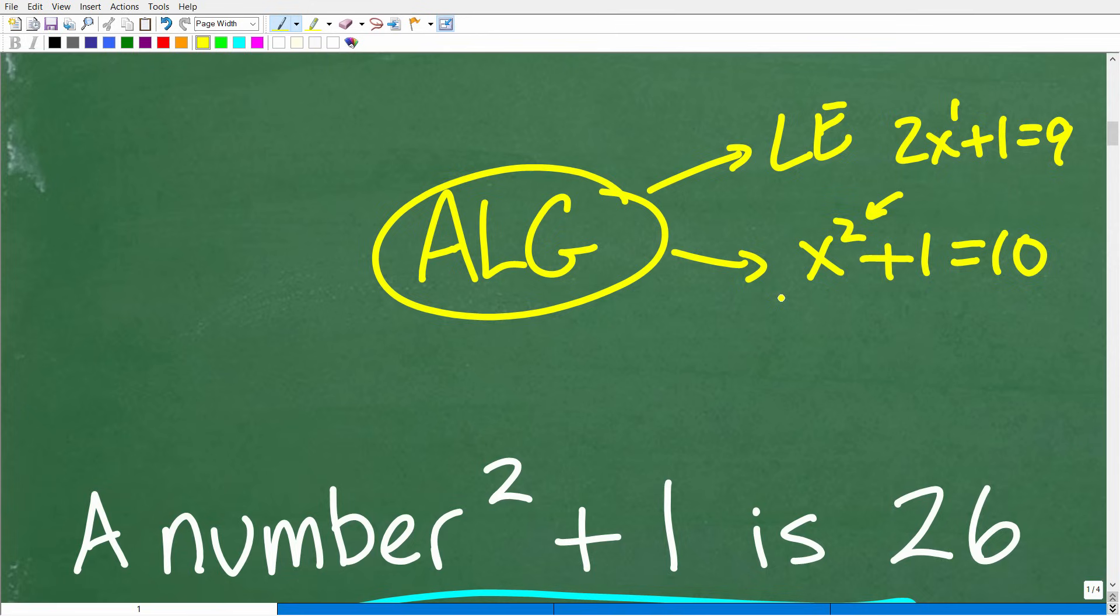A linear equation - the variable, the highest power is 1. When we put a variable to a power of 2, the highest power of the variable in that equation is 2, this is a quadratic equation. When you have equations where you have a variable to second degree, that's a quadratic equation.